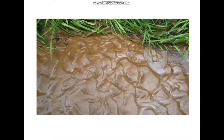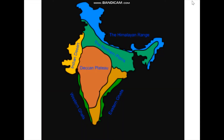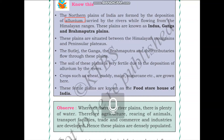The northern plains are located between the Himalayan range and the peninsular plateau. Here we have the Himalayan range, and the peninsular plateau - also known as the Deccan plateau - is located here. So the northern plains are present in between the peninsular plateau and the Himalayan range.